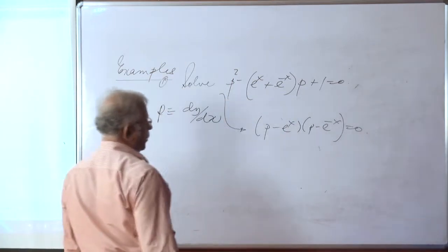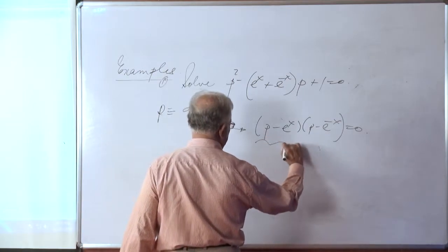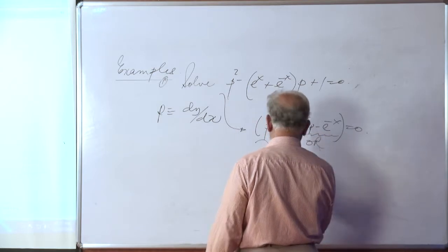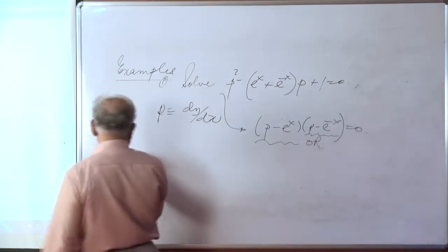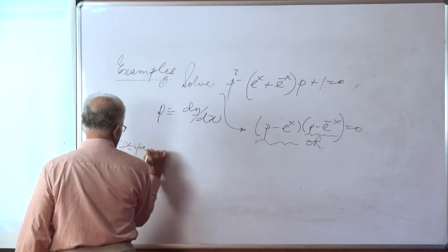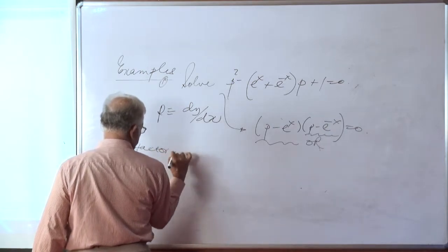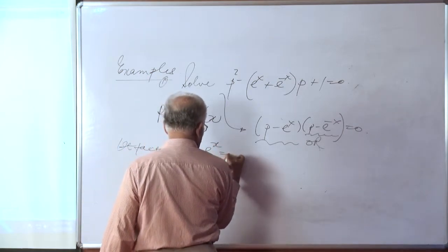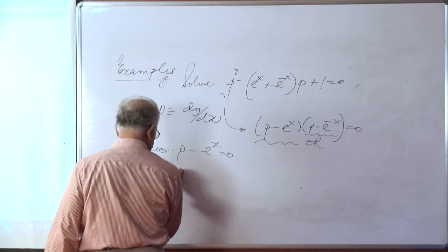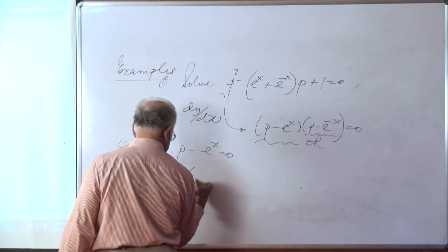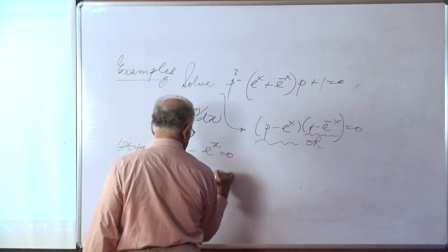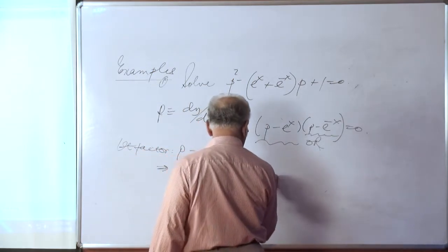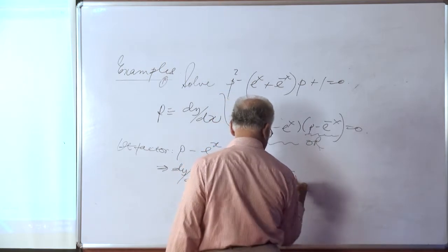We take the cases one by one. P − e^x = 0, or the second factor is equal to 0. Taking the first factor: P − e^x = 0, in other words dy/dx = e^x. This implies y = e^x + c₁.